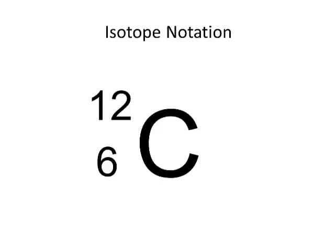Here we see one form of isotope notation for the isotope carbon-12. The top number is called the mass number, and it is the sum of the number of protons and neutrons in the atom's nucleus. So this isotope of carbon has a combined total of 12 protons and neutrons. The bottom number is the atomic number, and it's the number of protons in that atom.